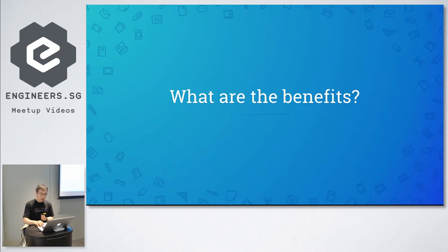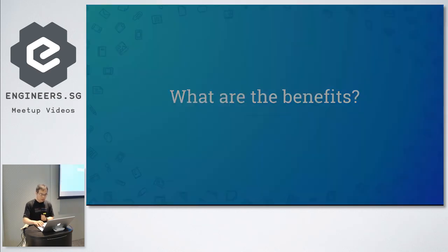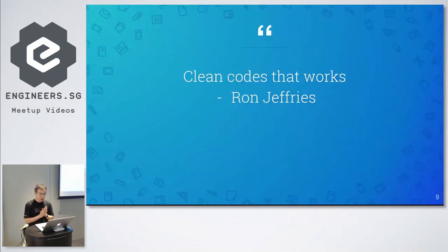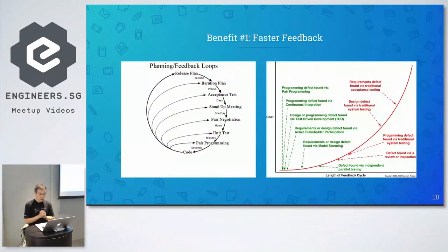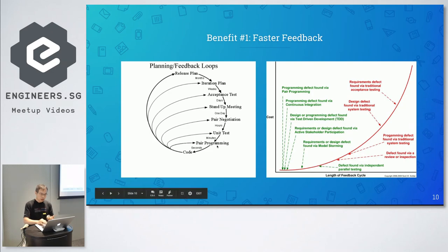To quickly show some benefits: if you follow TDD, you can write clean code that works. One reason is you get faster feedback about whether you've done something wrong, whether your changes are correct, or whether you introduced bugs. This graph shows different techniques — pair programming, unit test, stand-up meeting, acceptance test, iteration plan — that give you feedback during the development cycle.